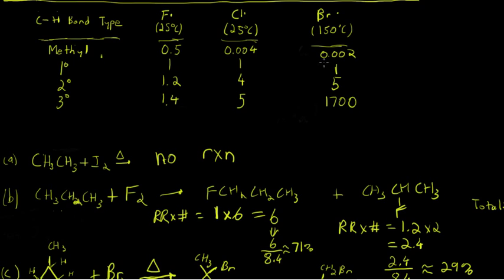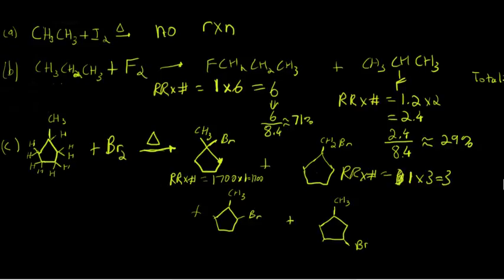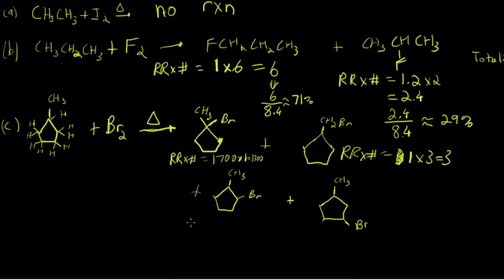So with bromine, I think this is a mistake here. This should not be 5, this should be 80. So bromine has a relative reactivity of 80 with secondary hydrogens. So the relative reactivity times the number, it's going to be 80 times 4. That's going to give you 320.